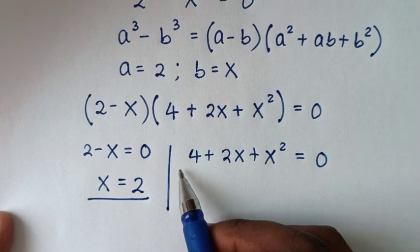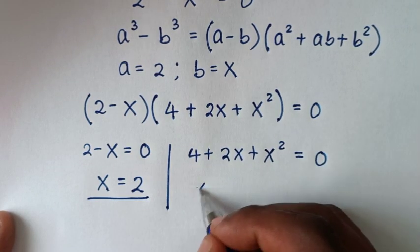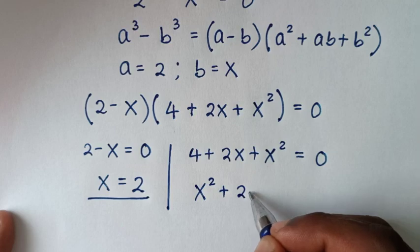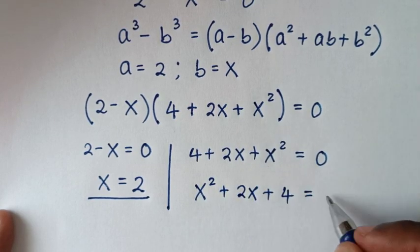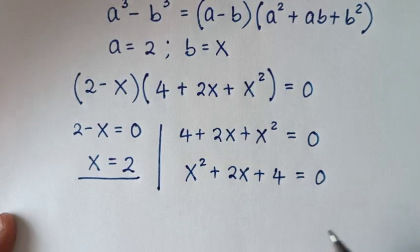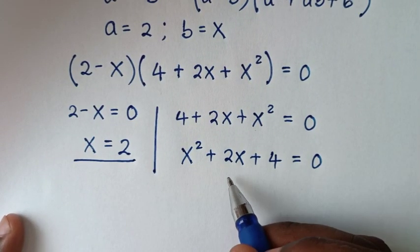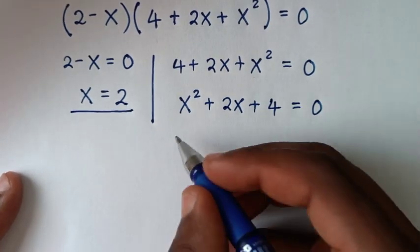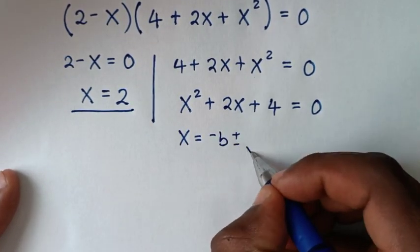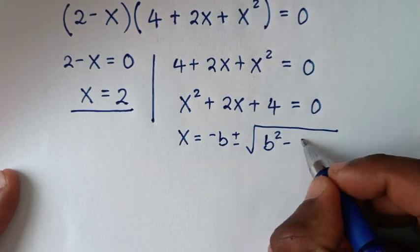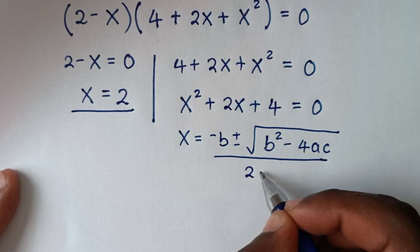To solve the quadratic equation, let's rearrange it starting with x squared, then plus 2x, then plus 4 equals 0. From this quadratic equation, we'll use the quadratic formula, which is x equals negative b plus or minus the square root of b squared minus 4ac, over 2a.